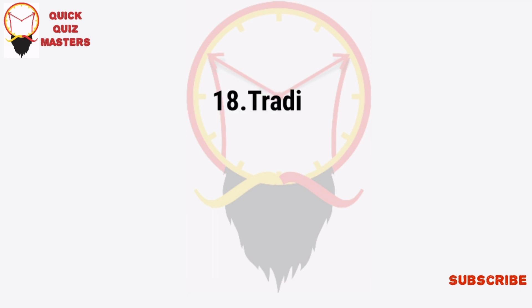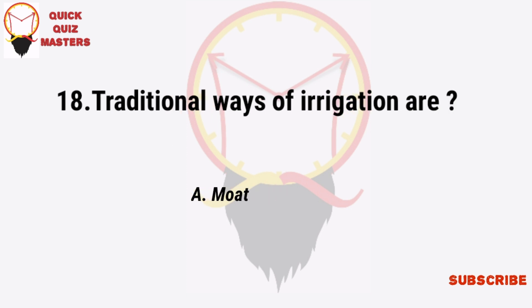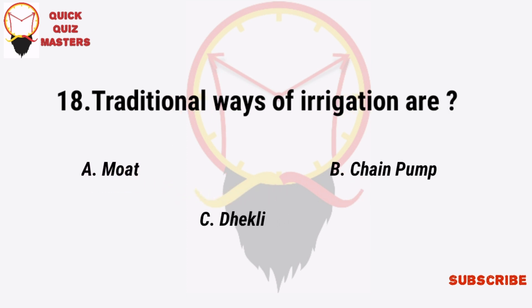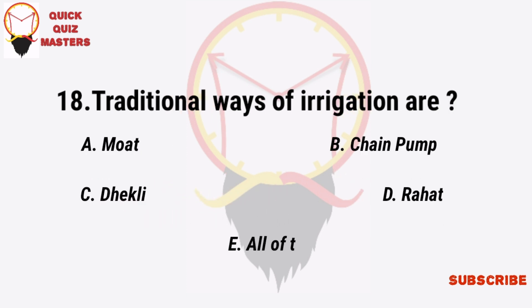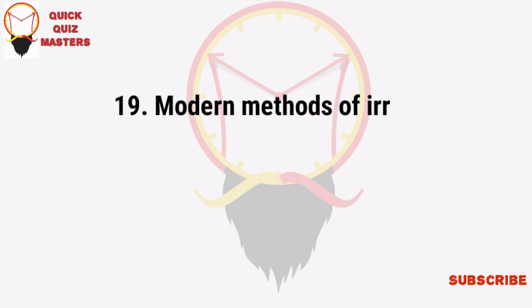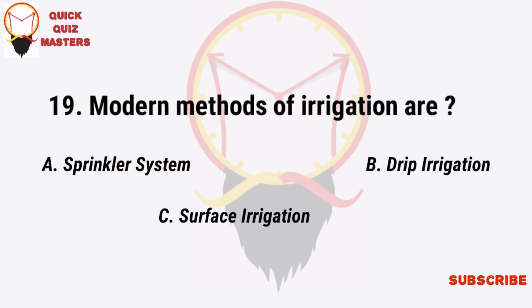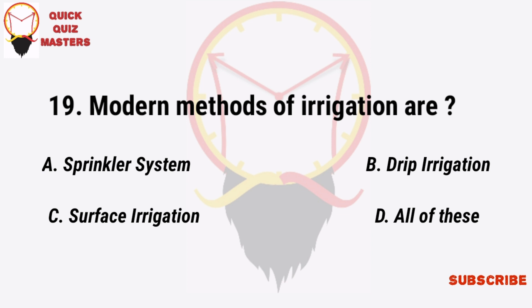Traditional ways of irrigation are: moat, chain pump, dhekli, rahat — all of these. Modern methods of irrigation are: sprinkler system, drip irrigation, surface irrigation — all of these.